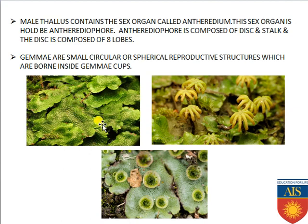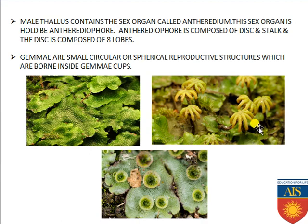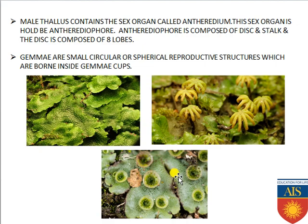Looking at the figure, you can understand the liverwort structure — leaf-like, dorsoventrally flattened. From the surface, umbrella-like structures have originated showing ray-like structures; those are archegonia held by a stock-like structure called the archegoniophore. The small green structures visible within the gemma cups are the gemmae — small circular reproductive structures. This is the overall structure of liverwort or Marchantia.